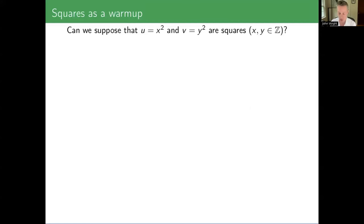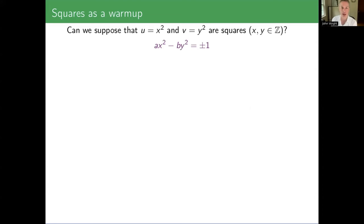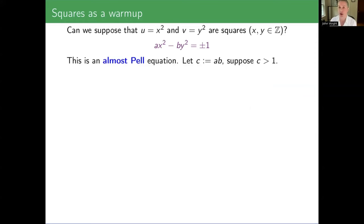So can we take these coefficients to be squares? When you plug in for U and V, you need to solve Ax² minus By² equals plus or minus one, keeping the symmetry in A and B. What type of Diophantine equation is that? It's a quadratic equation, so you're probably thinking it is almost a Pell equation. The Pell equation would be of the form X² minus C·Y² equals one.